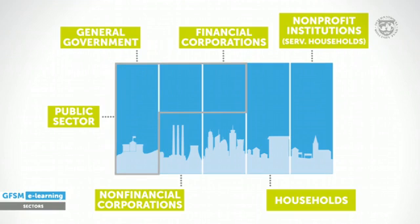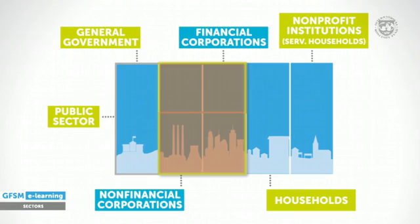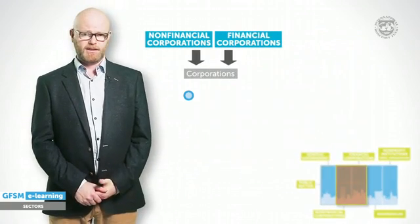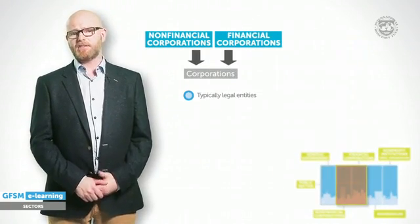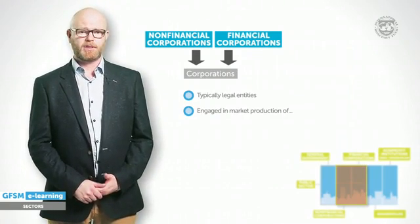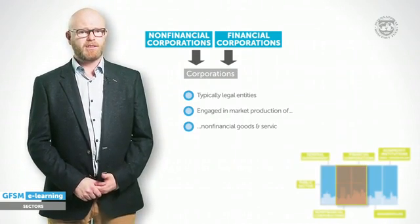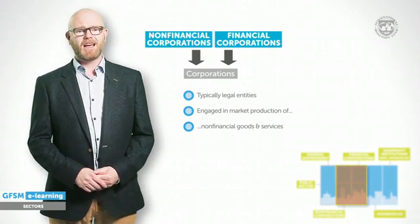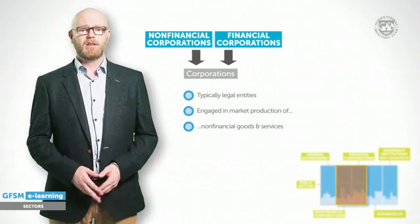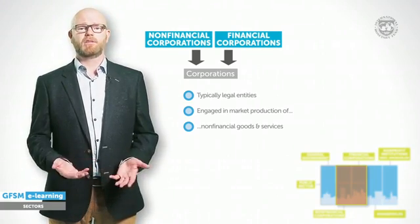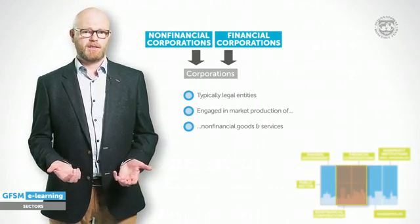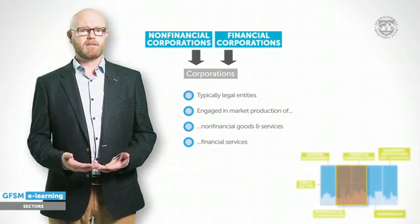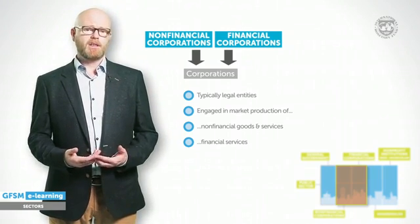Moving on to the next two sectors – the non-financial and financial corporations. Corporations are typically legal entities. A central characteristic is that they operate with the objective to engage in market production of goods and services. The non-financial corporation sector covers units engaged in the production of goods and services, such as food, furniture or cars, and the provision of legal or real estate services. The financial corporation sector typically includes banks, insurance corporations, holding companies and mortgage lenders. Note that this sector also includes the central bank, which is not classified as a general government unit.